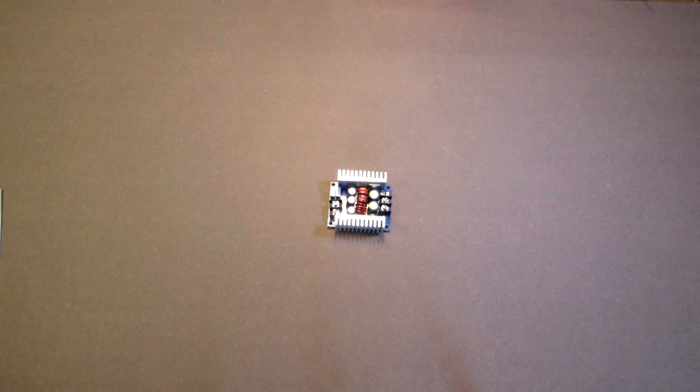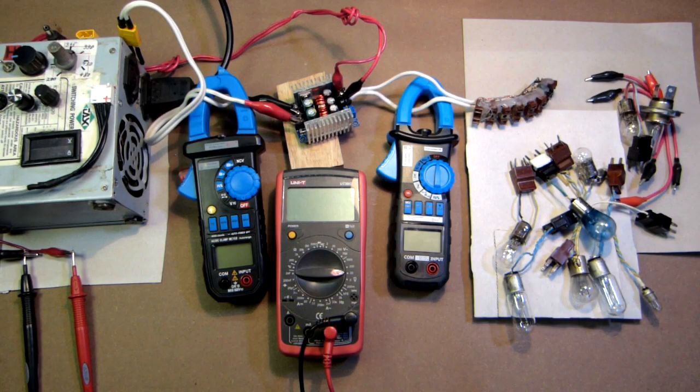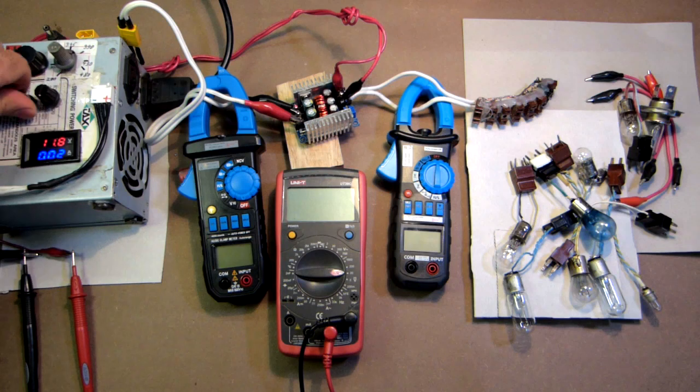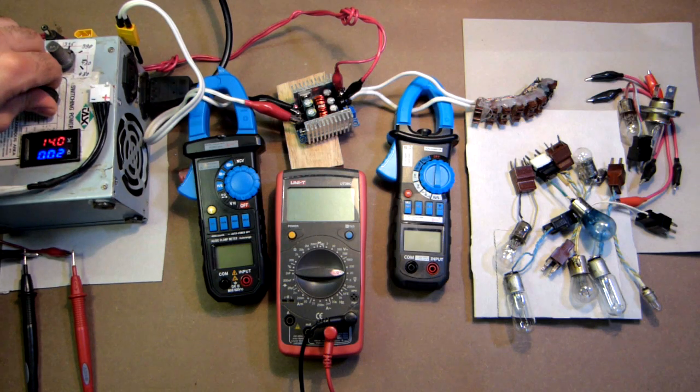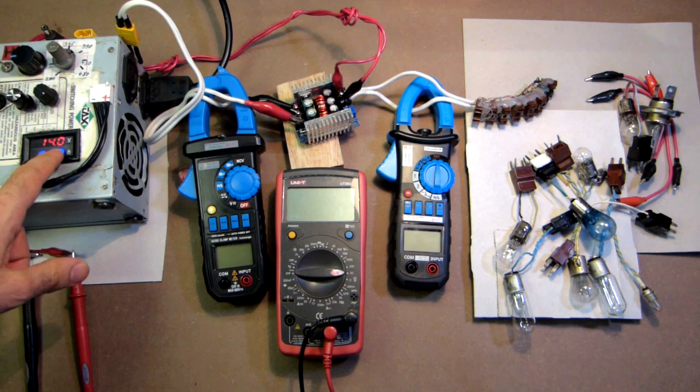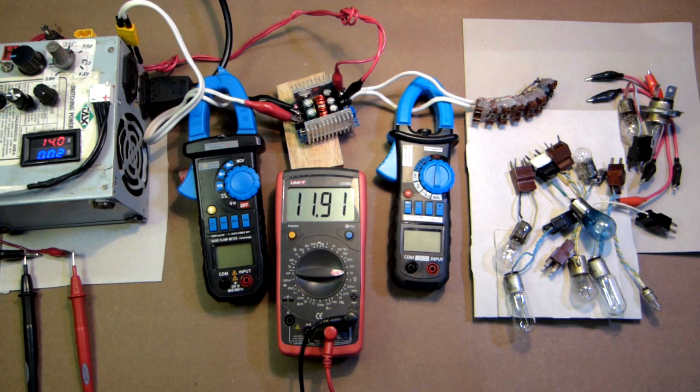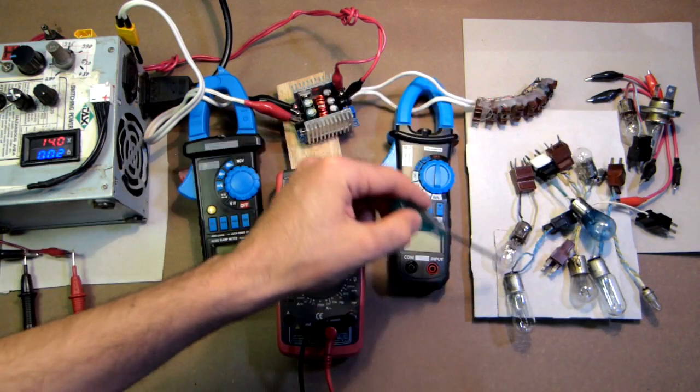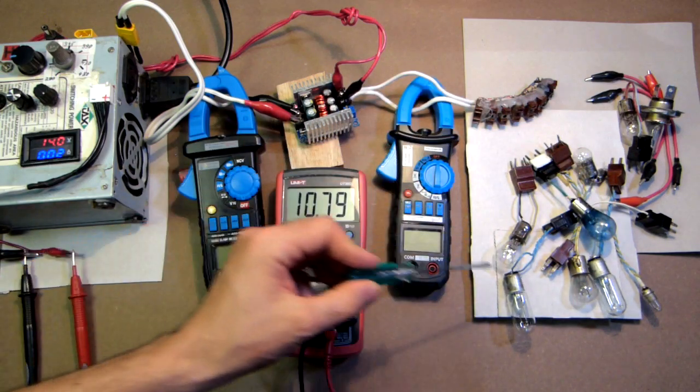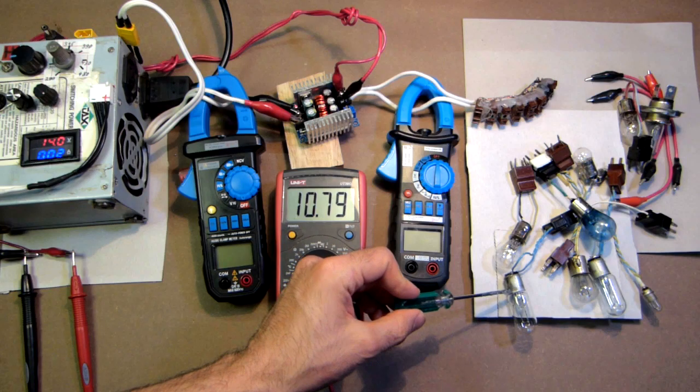Let's connect it to the power source, connect the load to it and test this device. So now everything is connected, the power source will be 14 volts and the output will be set to 8 volts, because one of these car bulbs is designed only for 8 volts.